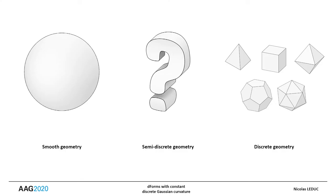The sphere and the platonic polyhedra are geometric figures with constant Gaussian curvature for smooth and discrete geometry. In a second step, we investigate which equivalents have the same property for the semi-discrete geometry.